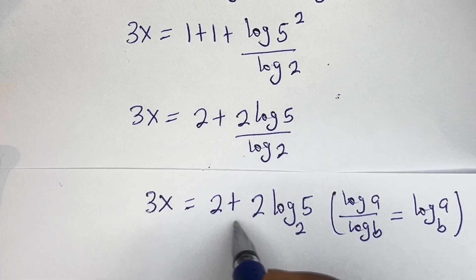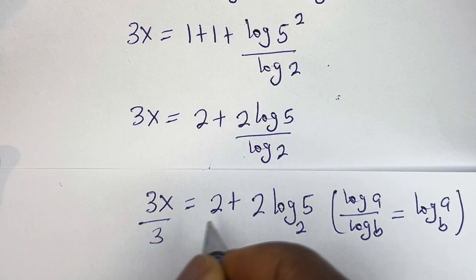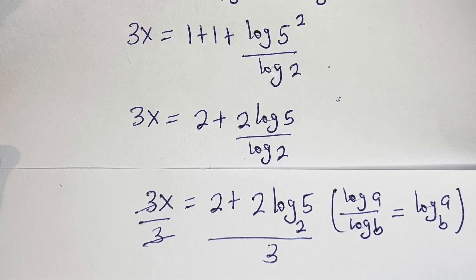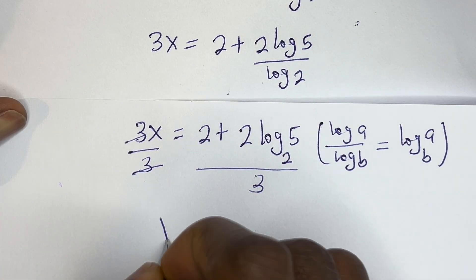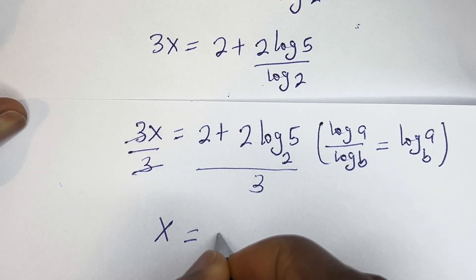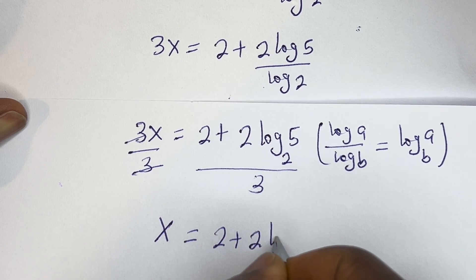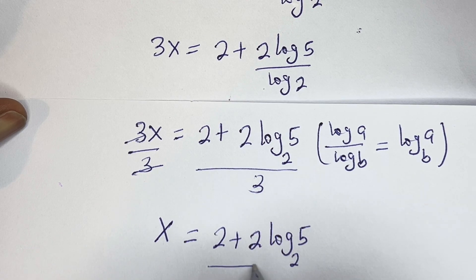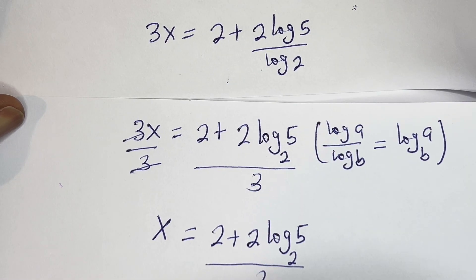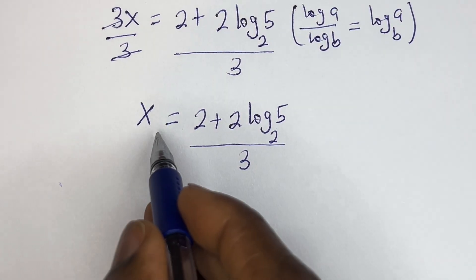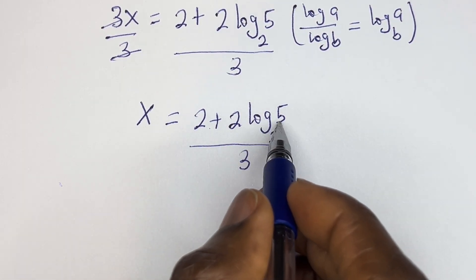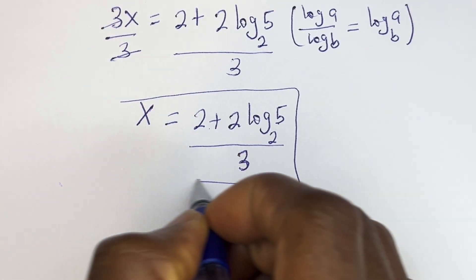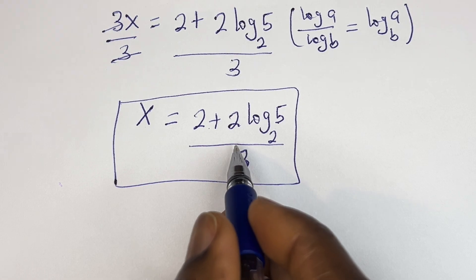Then let's divide everything by 3. This is divided by 3, this is divided by 3, and this will cancel this. So x is equal to (2 plus 2·log 5 base 2) over 3. And this is the value of x. We may check to confirm if this answer is right or wrong.